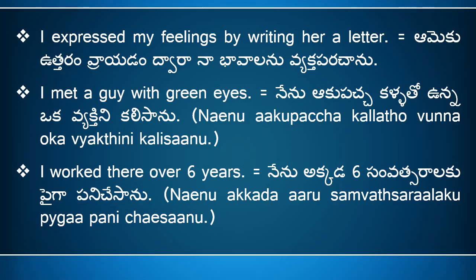'I met a guy with green eyes' means 'nenu akupaccha kallatohunna vyekthi ni khalisyanu.' Here, 'I' means 'nenu,' 'met' means 'khalisyanu,' 'a guy' means 'vyekthi' but we need to add suffix 'ni' after it, so 'a guy' means 'okavekthi ni.' 'With' means 'to,' 'green' means 'akupaccha,' 'eyes' means 'kallu,' and when we add the meaning of 'with,' we say 'kallatohu.' So 'with green eyes' means 'akupaccha kallatohu,' and the full sentence is 'nenu akupaccha kallatohunna vyekthi ni khalisyanu.'